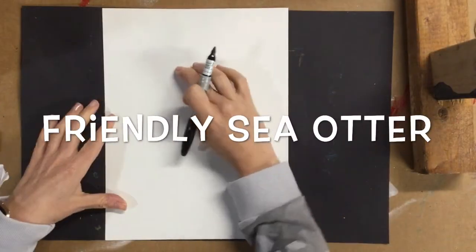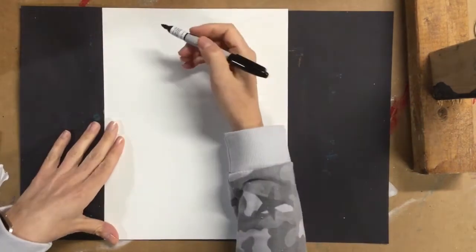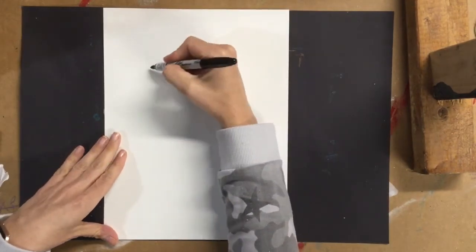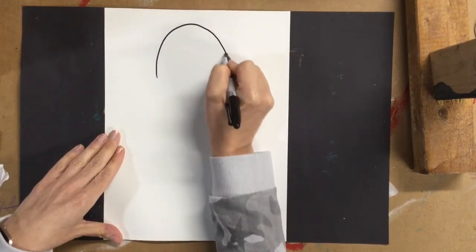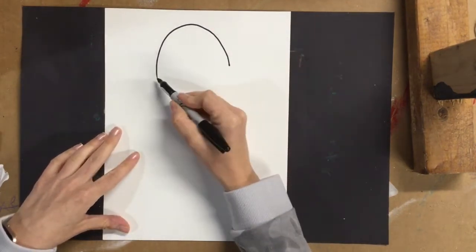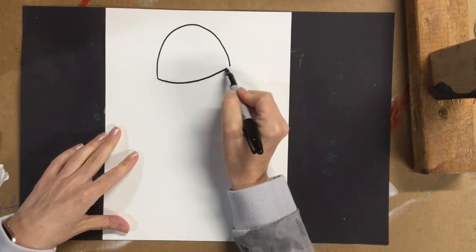So we're going to start at the top of the paper and we're going to make a kind of upside down U-shape for the otter's head. Let's close that U-shape with another curve.